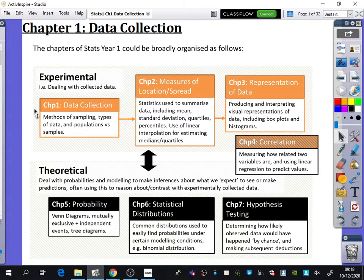The experimental half deals with experiments and collected data. We're going to start with data collection, which covers how you sample things, different types of data, populations and samples, and things like that.